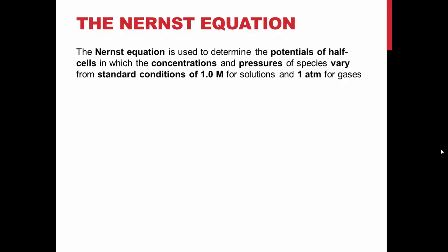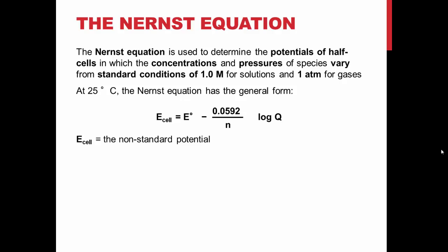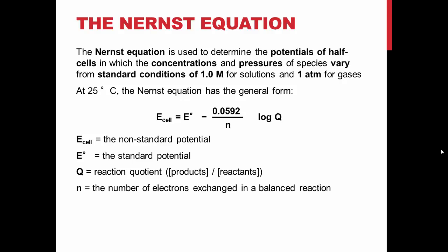The Nernst equation is used to calculate the potential for an entire electrochemical cell, or a half cell. The non-standard potential is what is measured during an experiment. It can also be calculated from the standard potentials of the half cells involved, as seen on the previous slide. E⁰ is the standard cell potential. Q is similar to equilibrium constant, except it is used to describe systems which are not at equilibrium. It is defined as the concentration of products divided by the concentration of reactants. N is the number of electrons that are exchanged during the reaction.